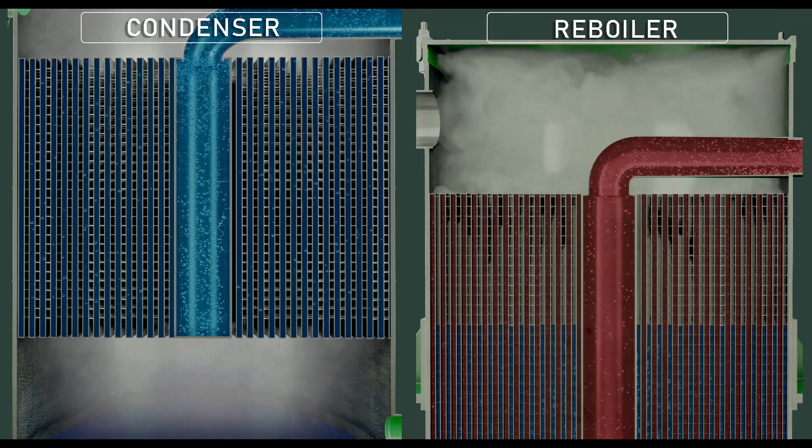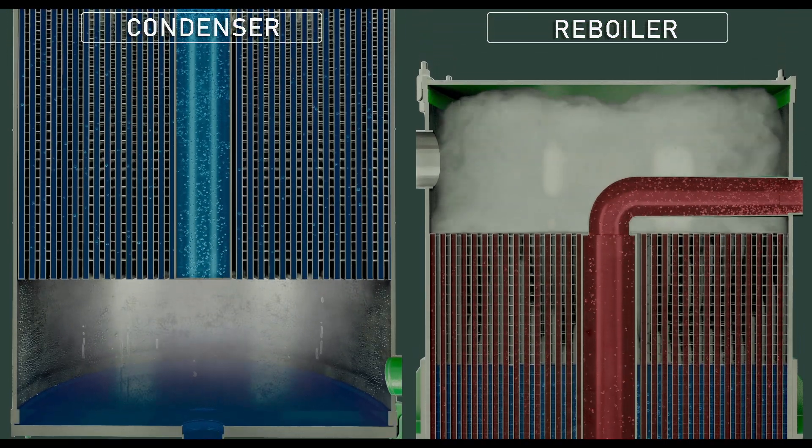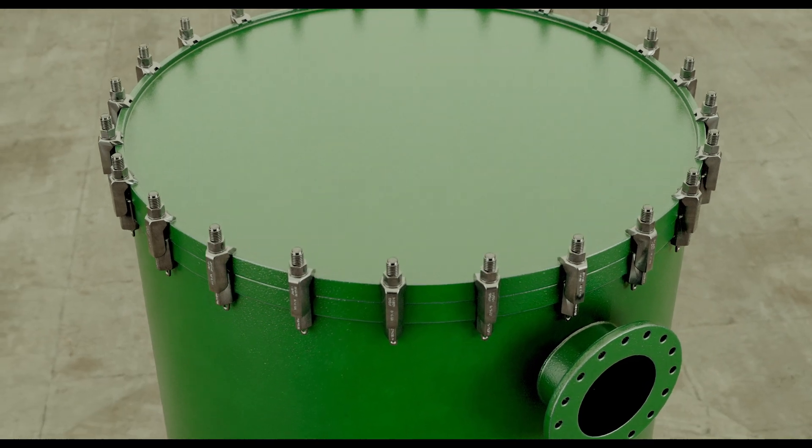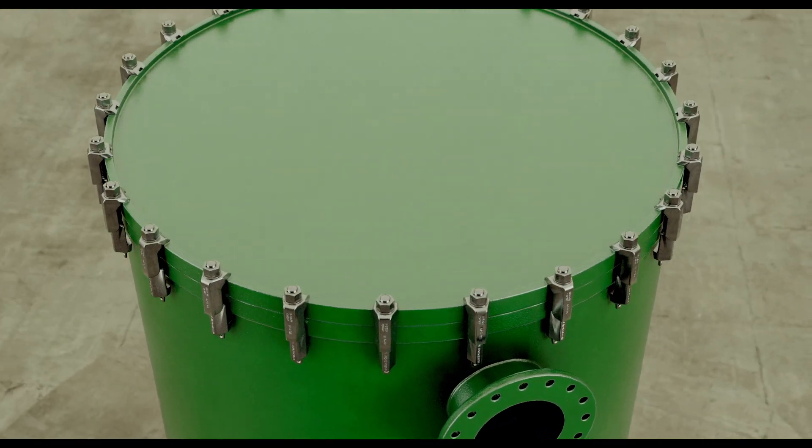As a reboiler or a condenser, the fluids circulate in an adjusted channel gap, fully opened, that is easy to access for inspection or mechanical cleaning.